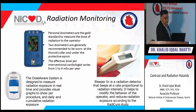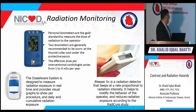Personal dosimeters are the gold standard for measuring radiation dose to operators. Two dosimeters are used — one placed at the thyroid collar level and one under the protective apron — allowing accurate monitoring of radiation dose, as is routinely done in the cath lab.